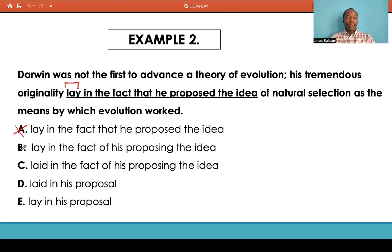B: laying the fact of his proposing the idea. Fact of his proposing idea is ungrammatical and that cancels out. C: laid in the fact of his proposing the idea. Laid in the past tense. In this case we are talking about something that happened in continuity, so lay will be perfect for that, not laid. So laid in the fact of his proposing, again grammatical false, you don't say in the fact of his proposing. That's wrong. C is out. D: laid in his proposal, again past tense, out.